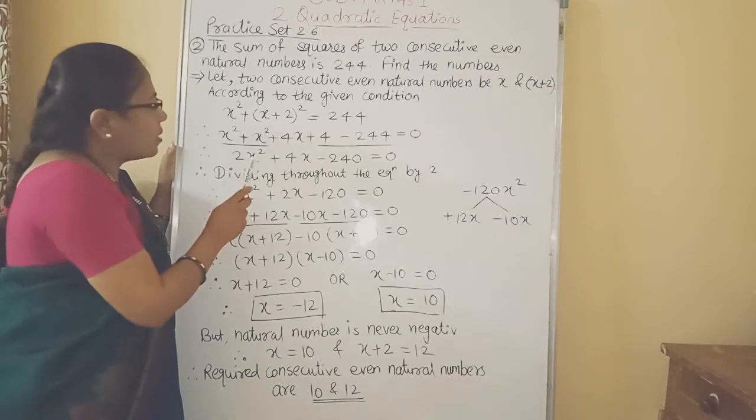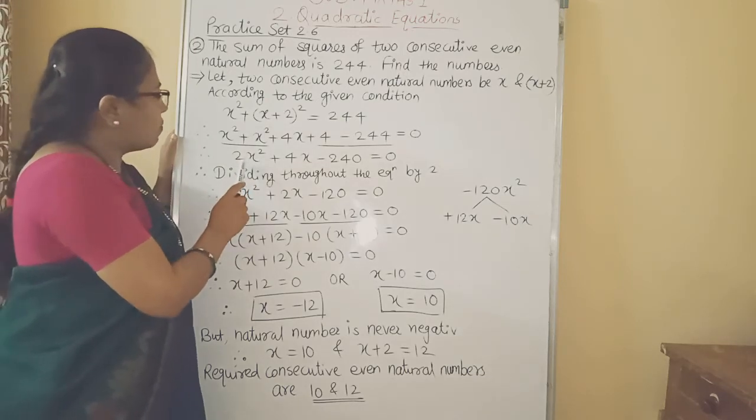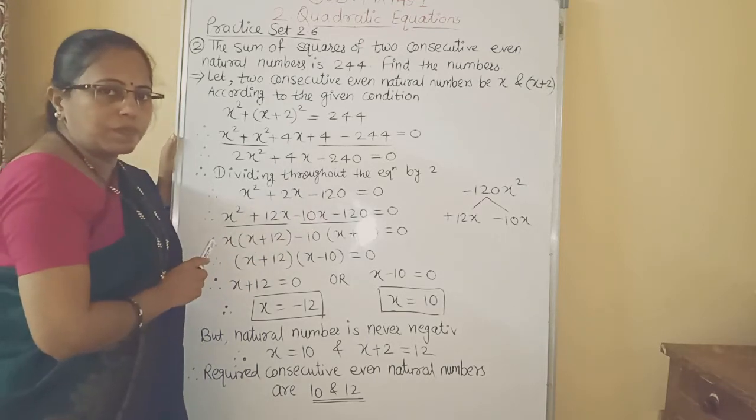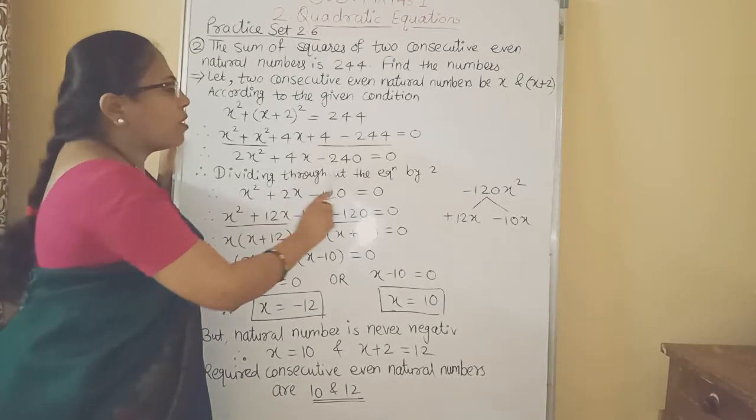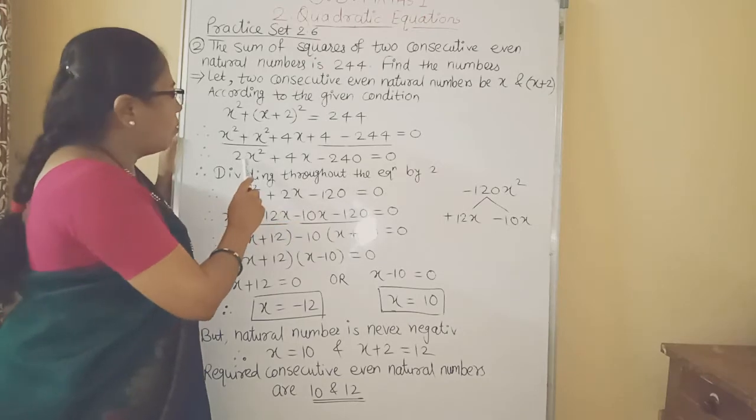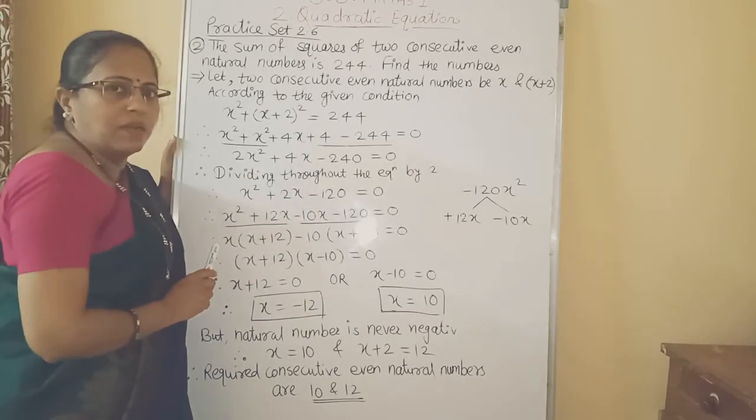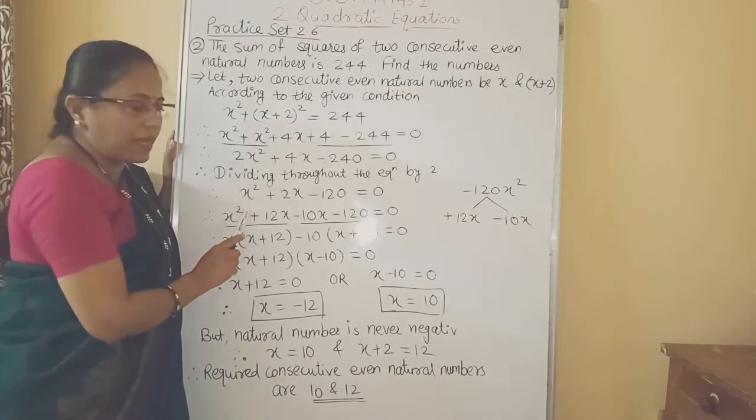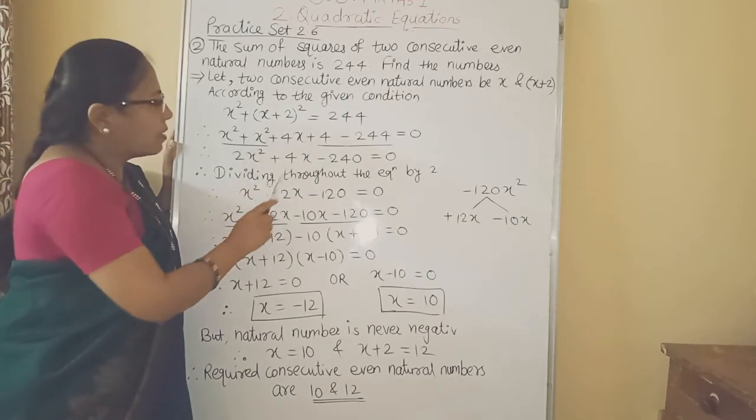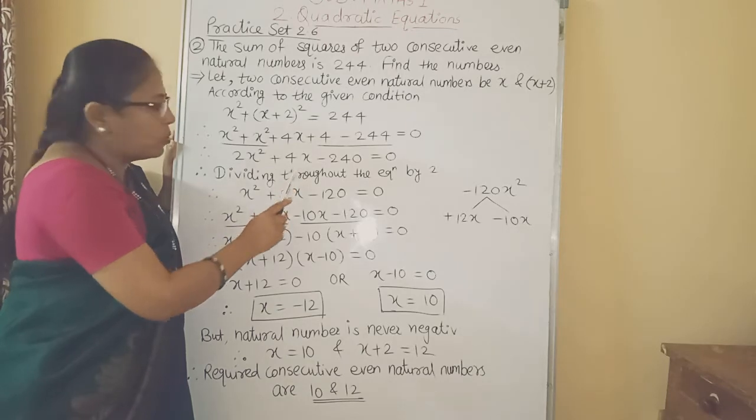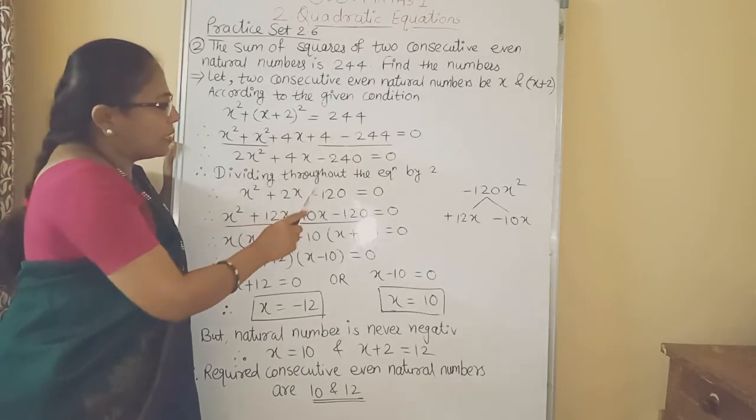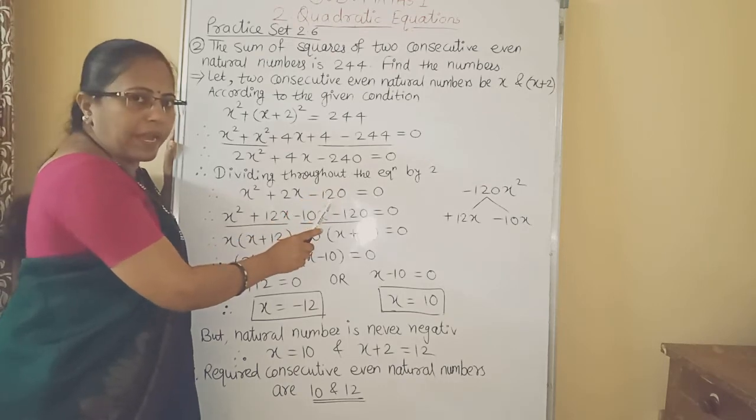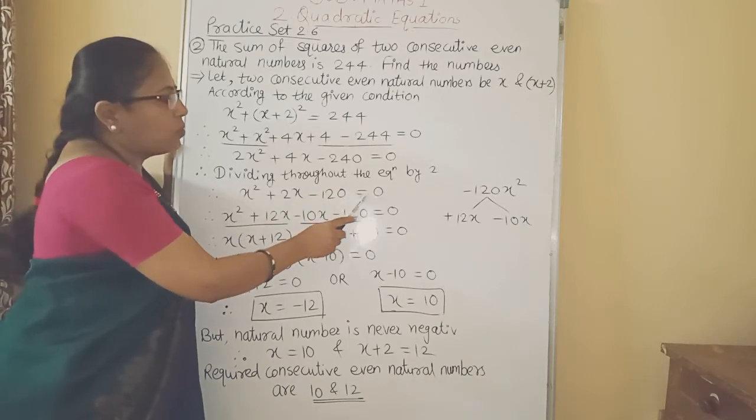Now student, if you observe the equation you will come to know that each term is divisible by 2. So dividing throughout the equation by 2. The whole equation we have to divide by 2. So if you divide first term by 2, we will get x square plus 4x divided by 2, 2x minus 240 divided by 2, 120 equal to 0.